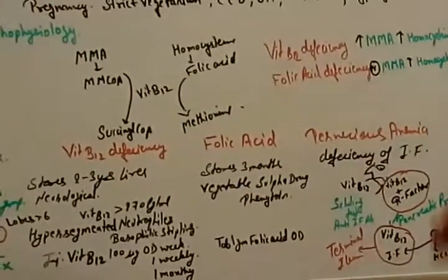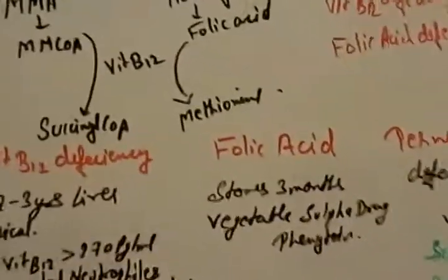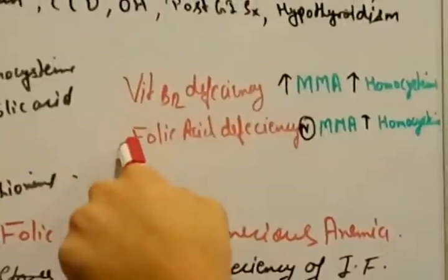Homocysteine converts into folic acid, and folic acid in presence of B12 it converts into methionine. Please camera bring in here so it's going to be visible more. Methionine, it is going to be methionine. Then how to identify the deficiency of vitamin B12 and folic acid.